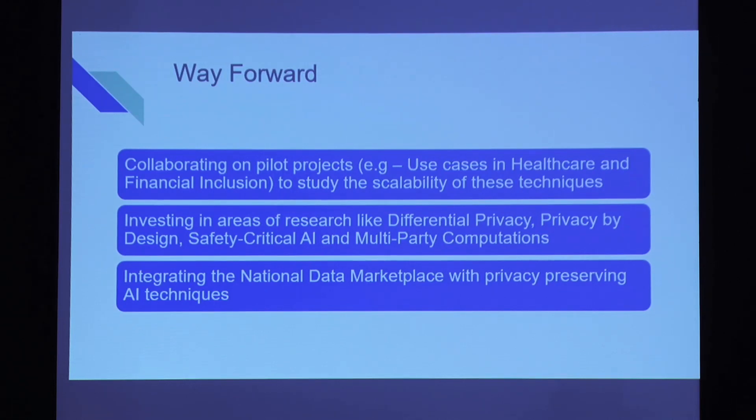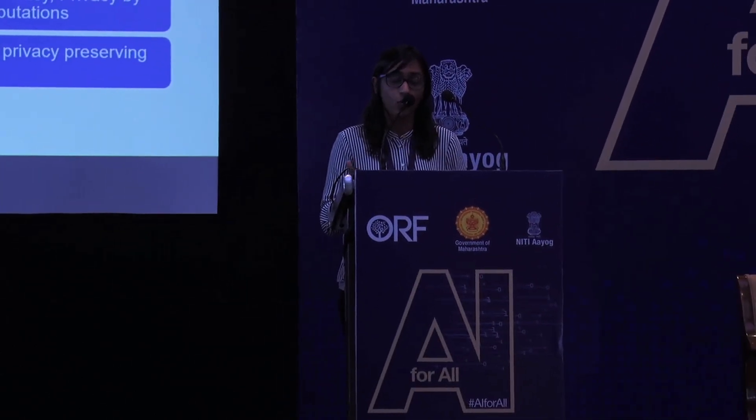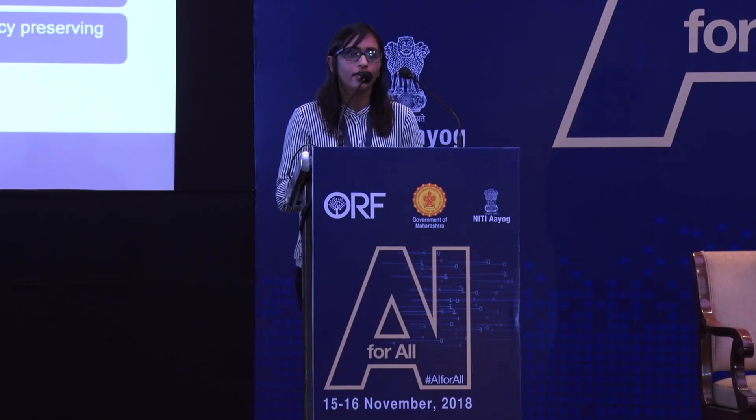We also just today launched a hackathon — the AI for All hackathon introduced by Ajay — which is a first-of-its-kind hackathon on privacy-preserving AI and distributed computing. It's already live. It's a two-stage hackathon. In the first stage, we're inviting proposals on AI use cases in the social sector: healthcare, education, urbanization, mobility, and agriculture. In the second stage, we'll be evaluating solutions on how well they utilize distributed computing, how well they understand privacy-preserving AI, and participants will have access to mentoring and libraries. This hackathon would be a very good medium for us to look at solutions and see if we could potentially scale them.